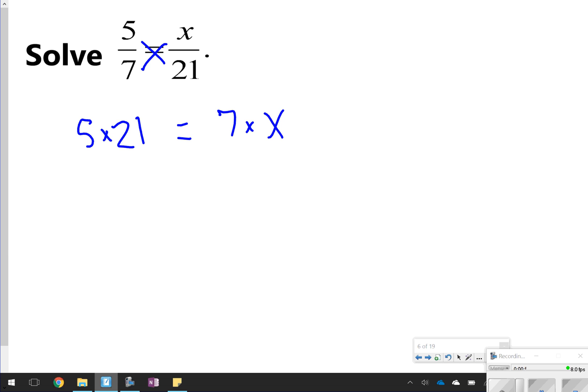Remember when we talked about knowing if something is proportional or not? Their cross-products will be equal to one another, so that's exactly what I'm doing here. 5 times 21 is 105, and 7 times x is 7x. That would be my first step.